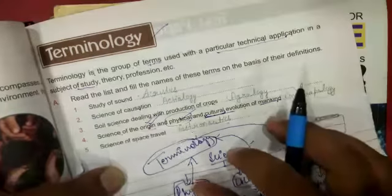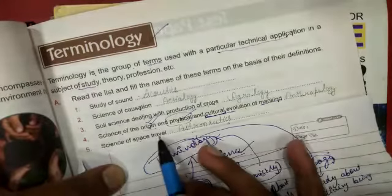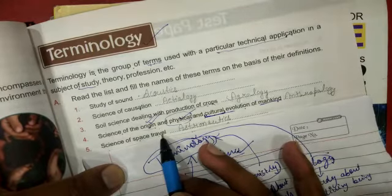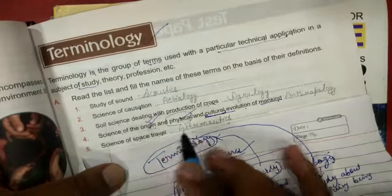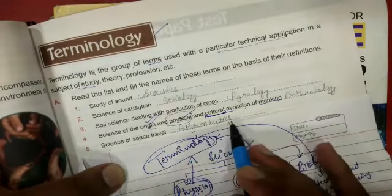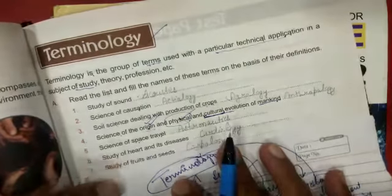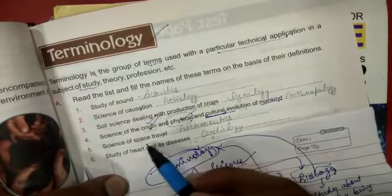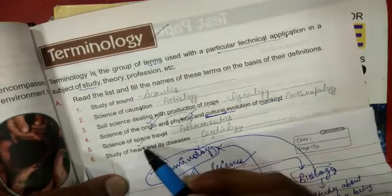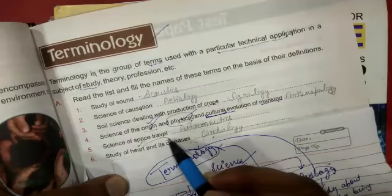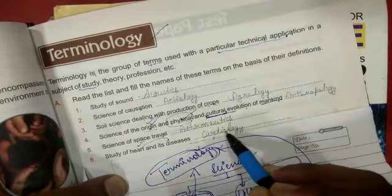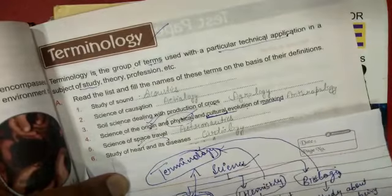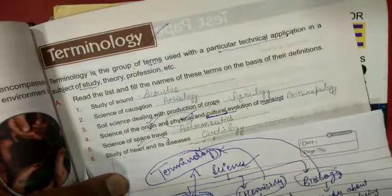The next one, science of space travel, how to travel, who traveled, everything about space travel, that is called astronautics. The next one, study of heart in which you study about heart and whatever disease is related with it, that is called cardiology.